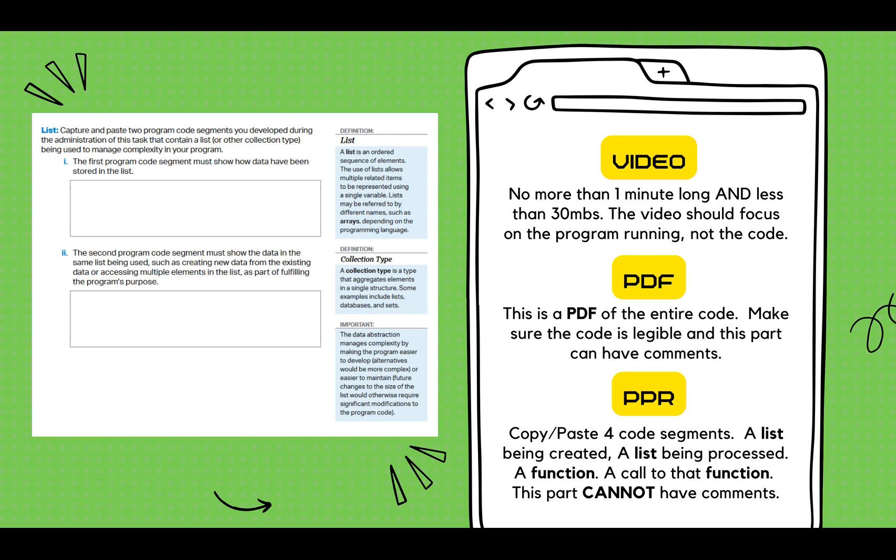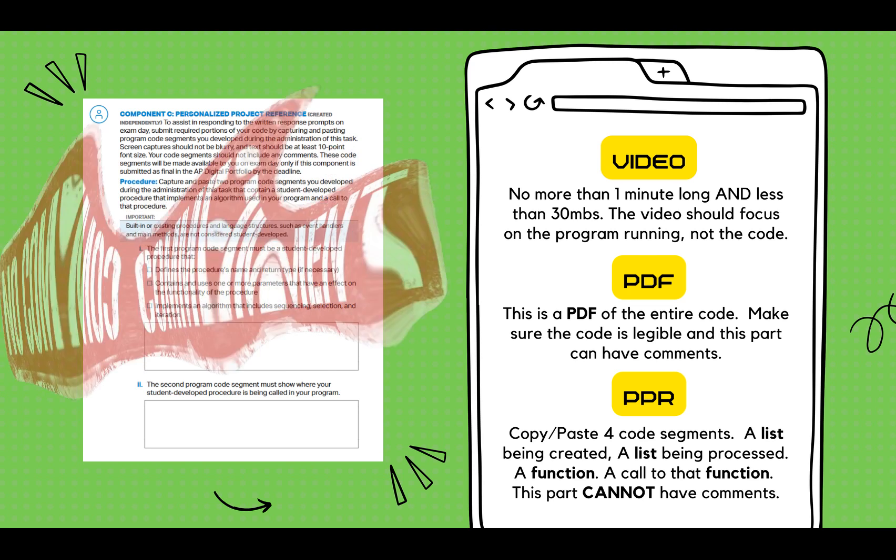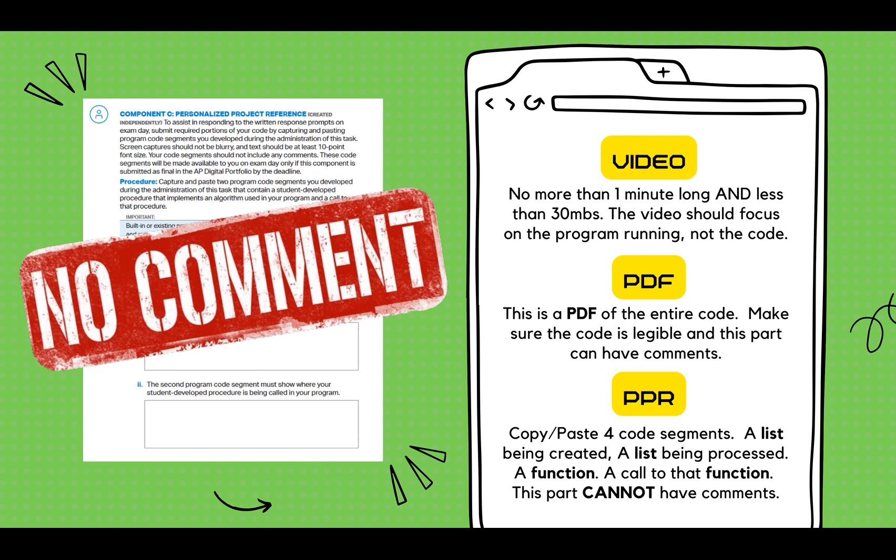Finally, you had to submit four code segments to your digital portfolio. The first is the list being created. The second is the list being used or processed. The third is a function with the above core requirements. And fourth, where in your program is that function being called? Big note here, none of these code requirements can have any comments at all. This is really important.